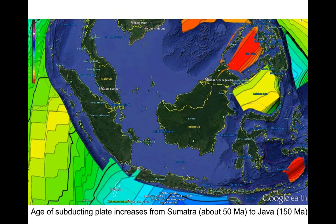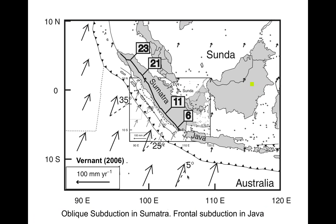The next relevant thing is the age of the subducting plate. There's a range of ages: the northern part of Sumatra starts at about 50 million years, and as we go progressively south the oceanic plate gets older and older — up to about 150 million years in Java. This has significant effects on subduction dip. Also, in Sumatra we have oblique subduction of 25 to 35 degrees, whereas toward Java the subduction becomes frontal.